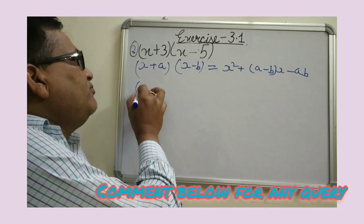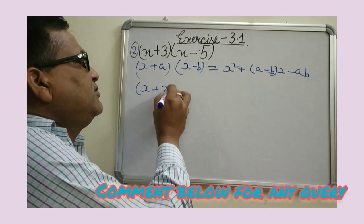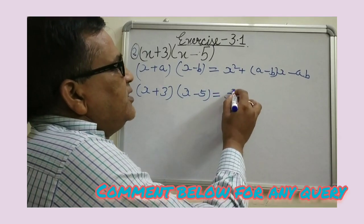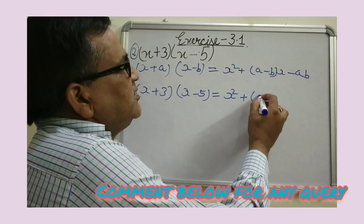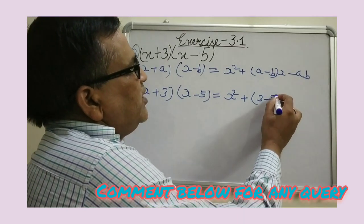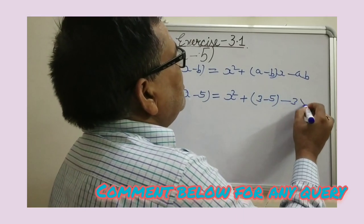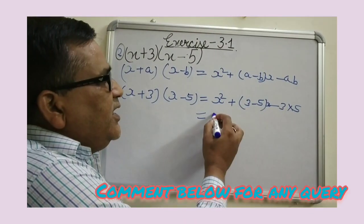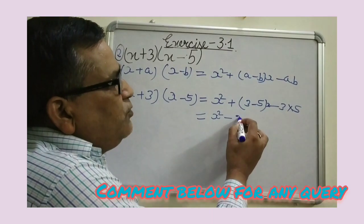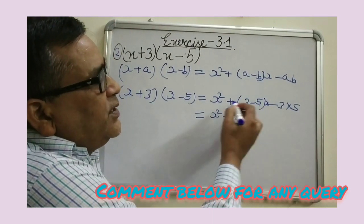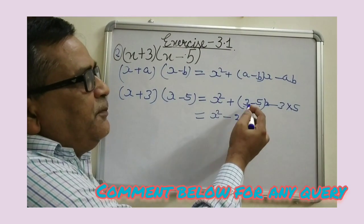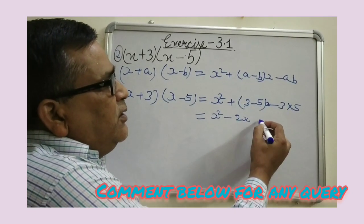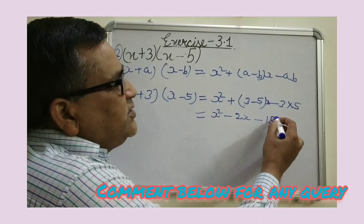By putting in the values x plus 3 into x minus 5, we get x squared plus 3 minus 5 into x minus 3 into 5. After solving, we get x squared minus 2x minus 15. We get minus 2 because in subtraction we take the sign of the greater number, giving minus 2x, and 3 times 5 is 15. This is the final answer.